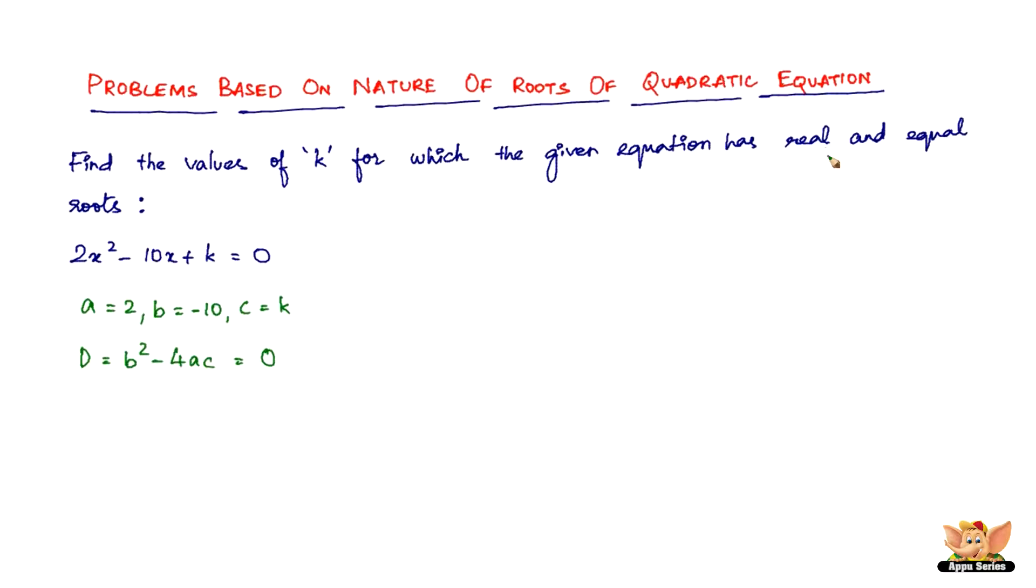That's the condition for real and equal roots. So now we've got b² - b is -10, the whole square minus 4 times a is 2 and c is k equal to 0. So (-10)² is 100, 100 - 8k equals 0. Or 8k equals 100.